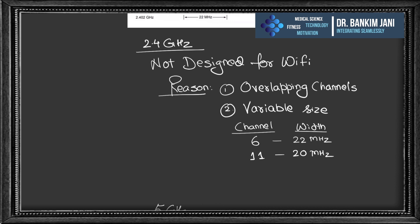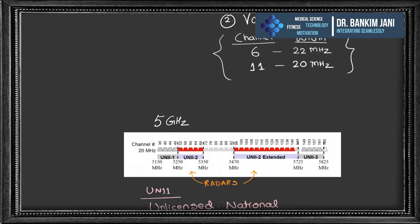There are overlapping channels and they are of variable size. Channel 6 has a width of 22 MHz while channel 11 has a width of 20 MHz, but 2.4 GHz is still widely used.